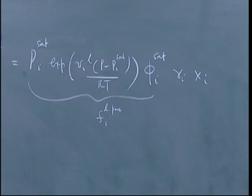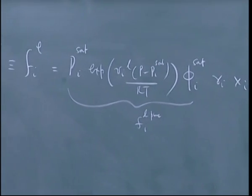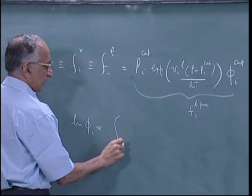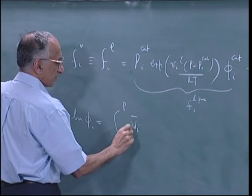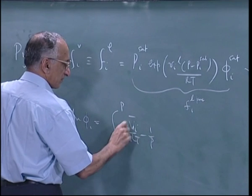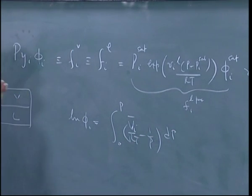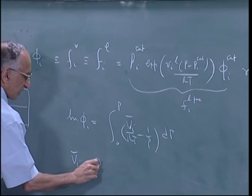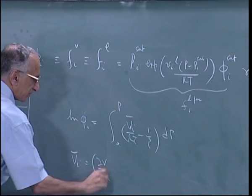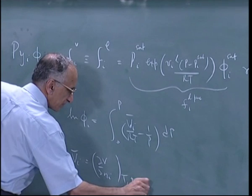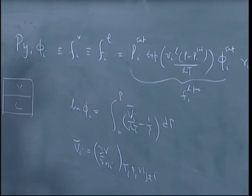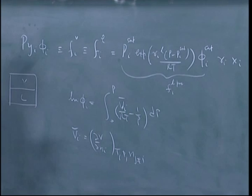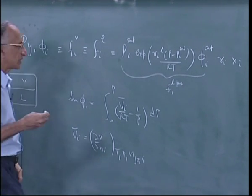Looking at each of the terms and how one would compute each of them — looking at the fugacity coefficients, this is fairly straightforward. This is by definition the integral from 0 to P. And A-bar is the partial derivative with respect to n of V. We discussed the example of the virial equation of state.